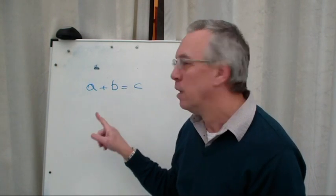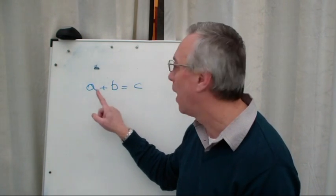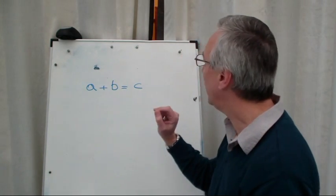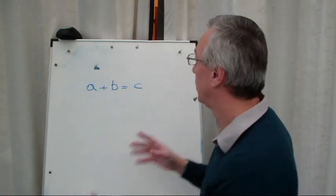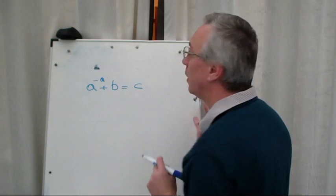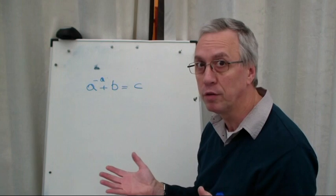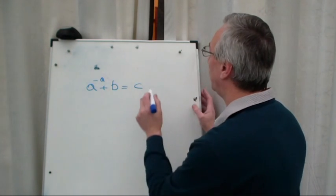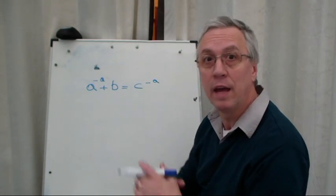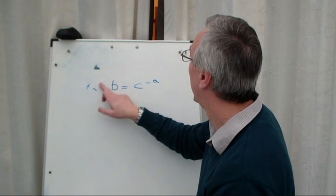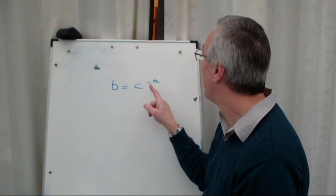If I want to make B the subject of this formula, I need to get rid of A. I want B on its own. So how can we get rid of A? Well, B minus A. Whatever I do to one side of the formula, I must do to the other to keep the balance. So I have to minus A off this side as well, C minus A. Now A minus A just cancels out, and I'm left with B equals C minus A.